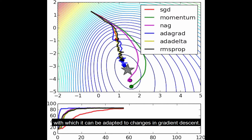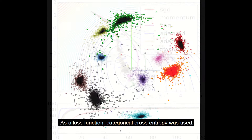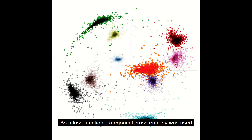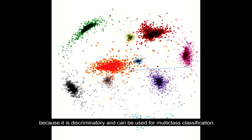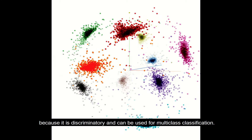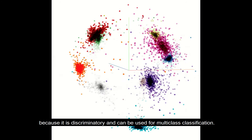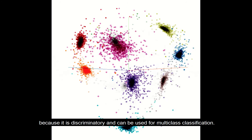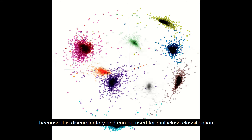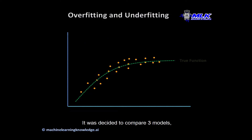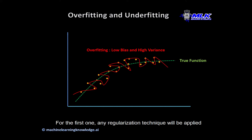The ADAN optimizer was chosen because it has an adaptive learning rate, allowing it to adapt to changes in gradient descent. As a loss function, categorical cross-entropy was used because it is discriminatory and suitable for multi-class classification.